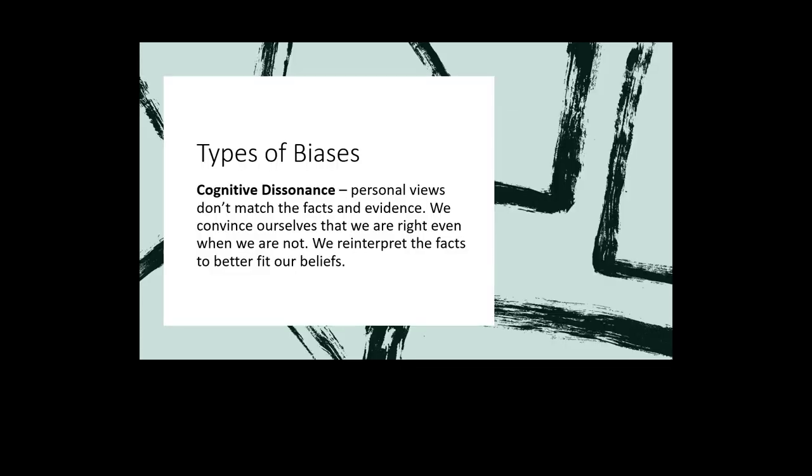We categorize our biases by the different ways in which they affect us and our perspective. One of the many types of biases is very familiar to us: cognitive dissonance. It's based on our personal views that don't actually match the facts or evidence laid in front of us. We convince ourselves that we are right even though the evidence and facts say otherwise, and we let ourselves reinterpret those facts to better fit our own worldviews and beliefs.